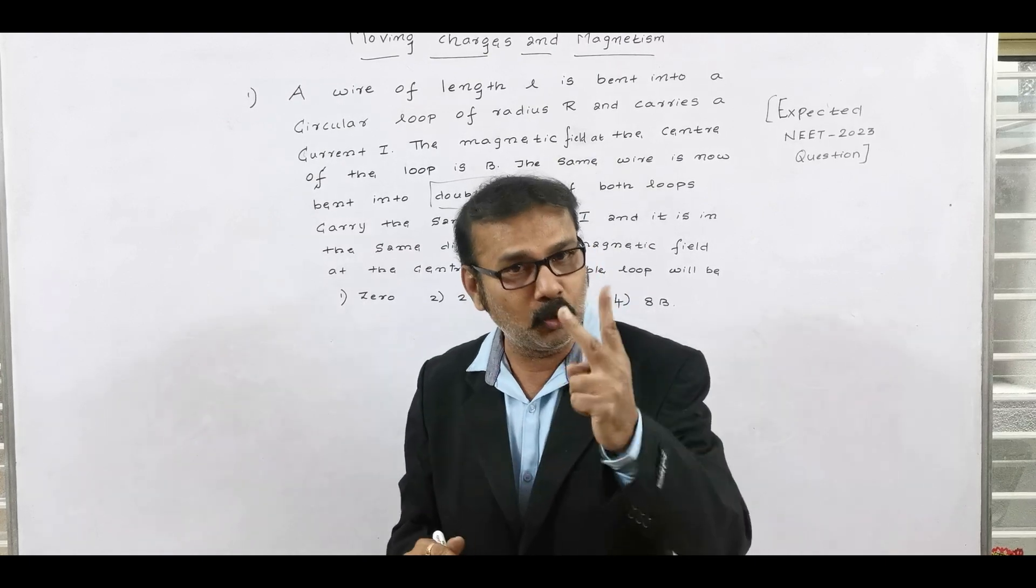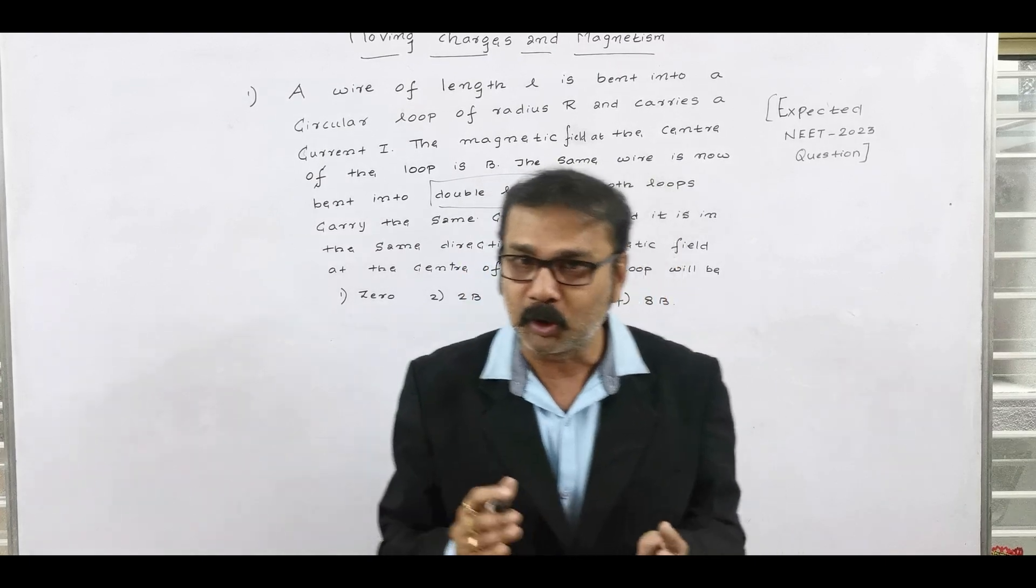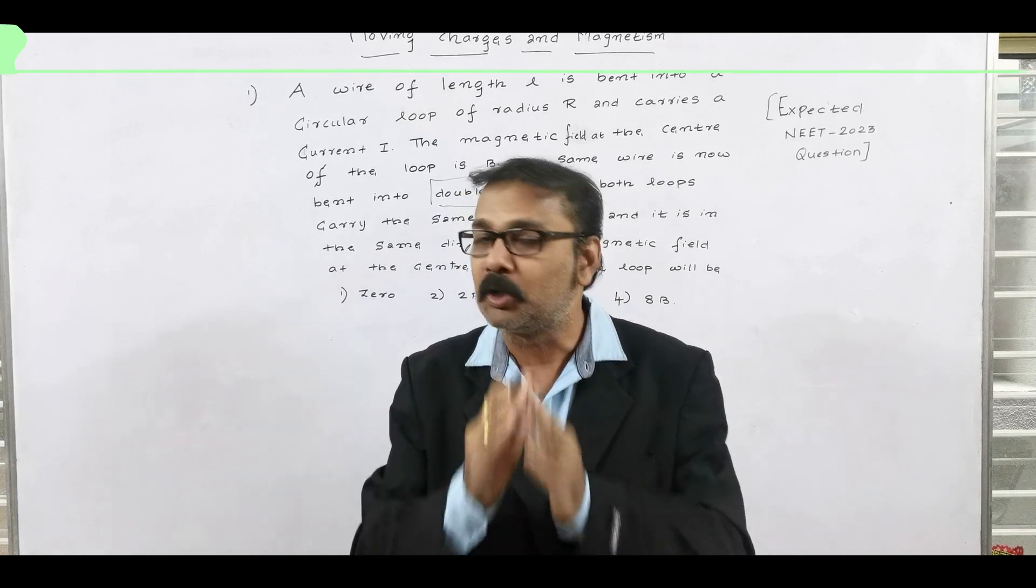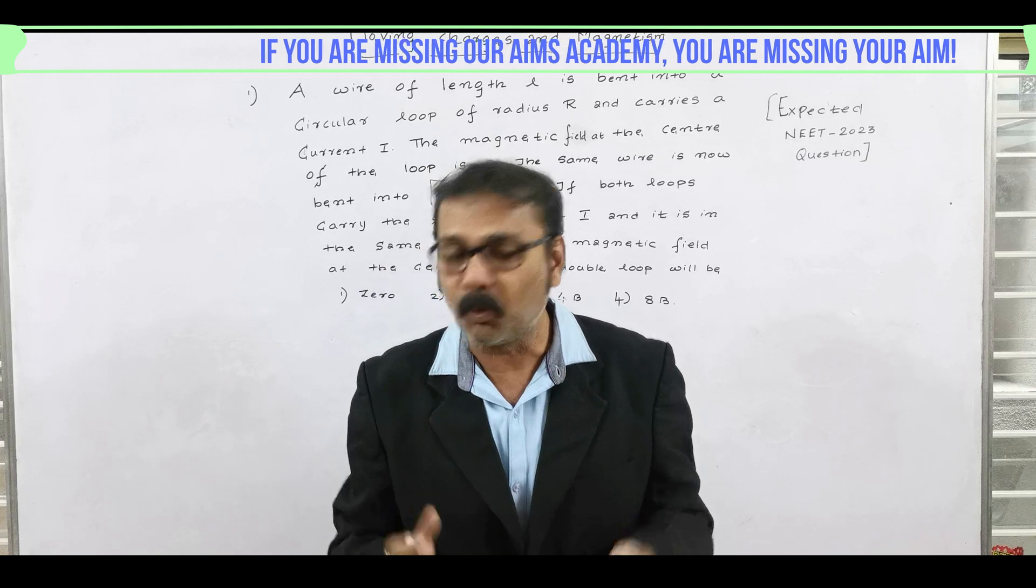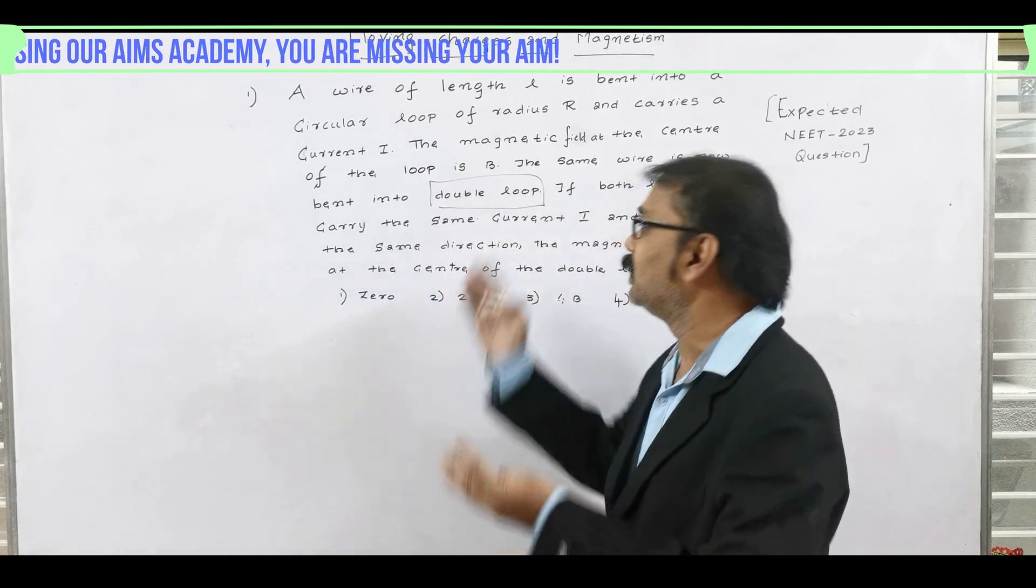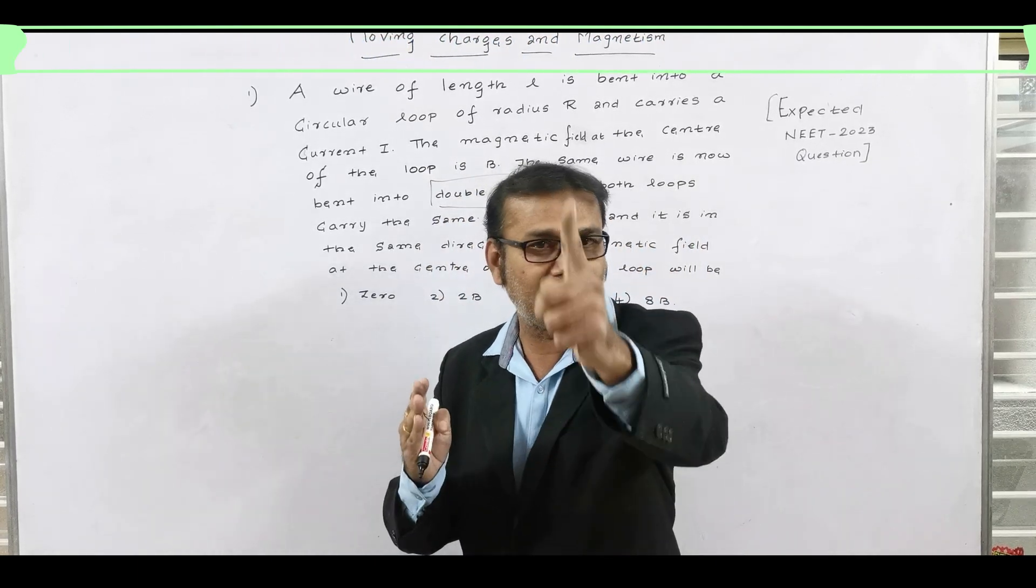So what is there my students? Yes? Yes, you are right. It is double loop means n is equal to 2. To find the answer for this question, don't go for any formula. Use my theory. What is my theory? So the theory says what is the number there? Just square it for the answer immediately.